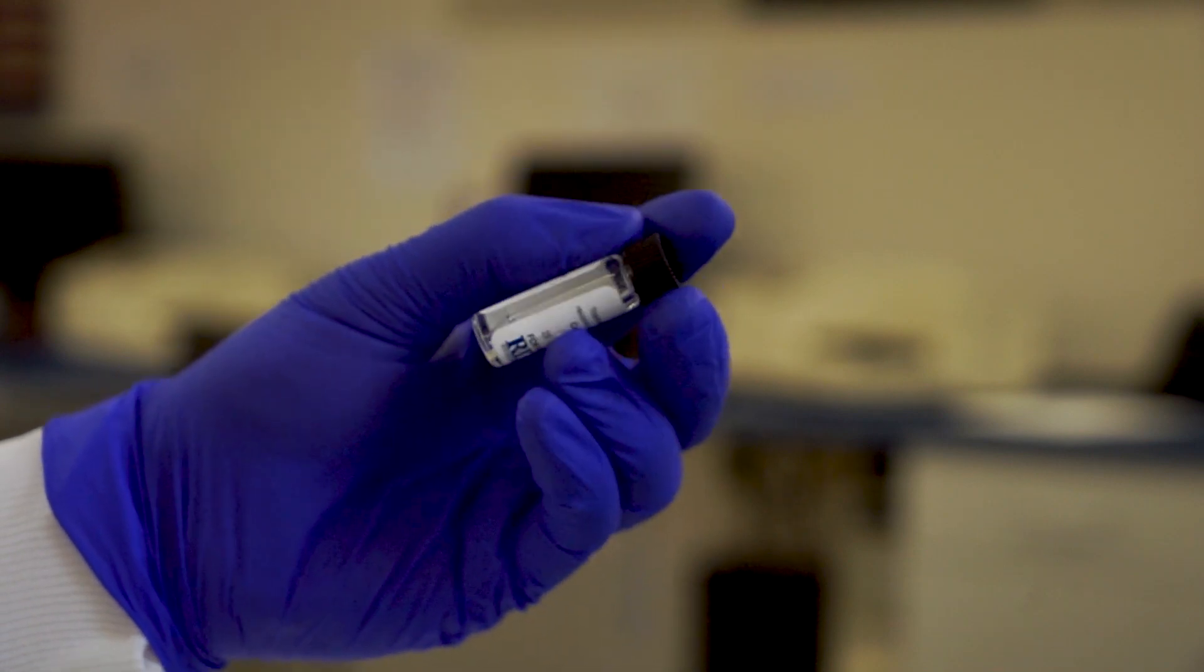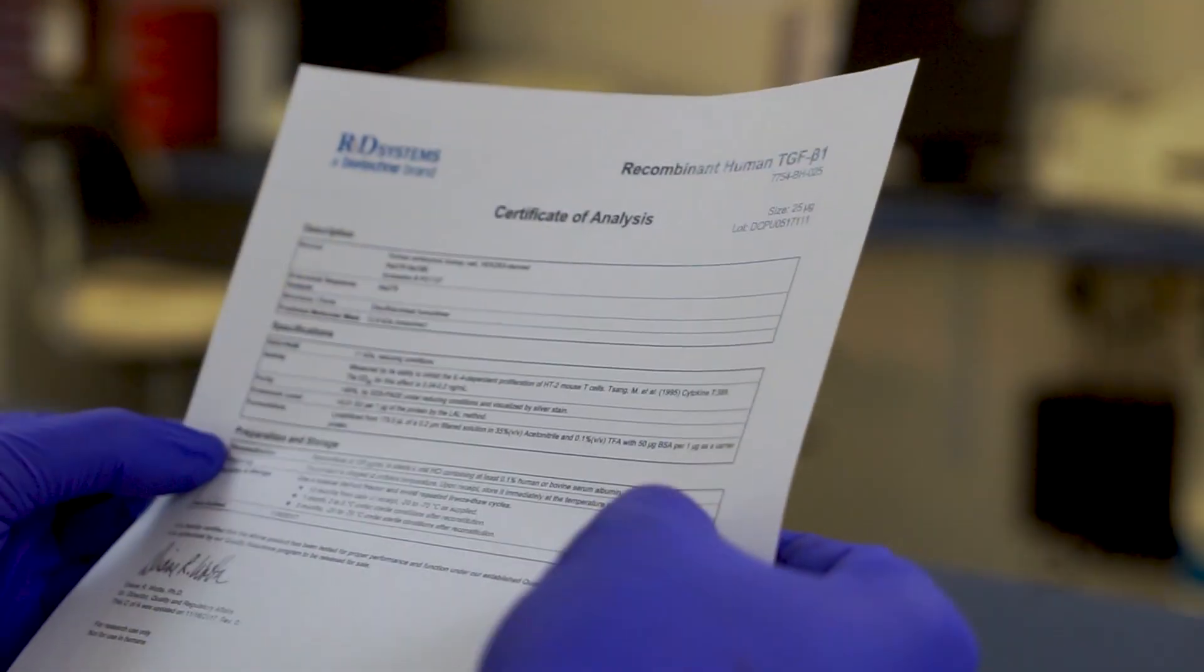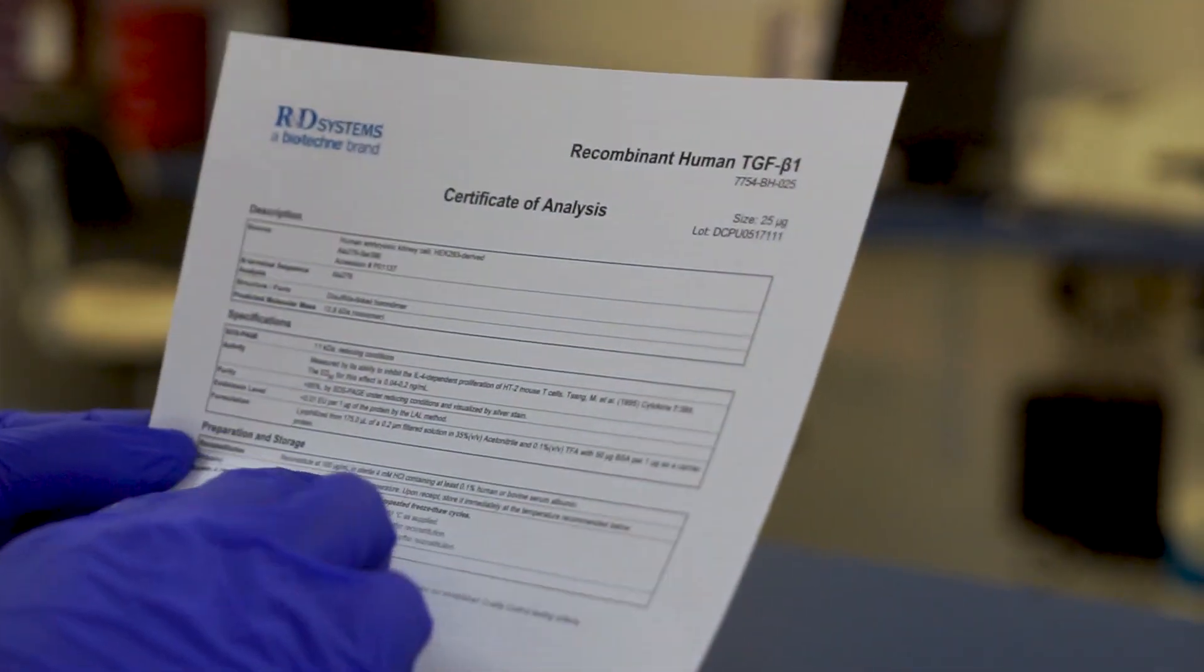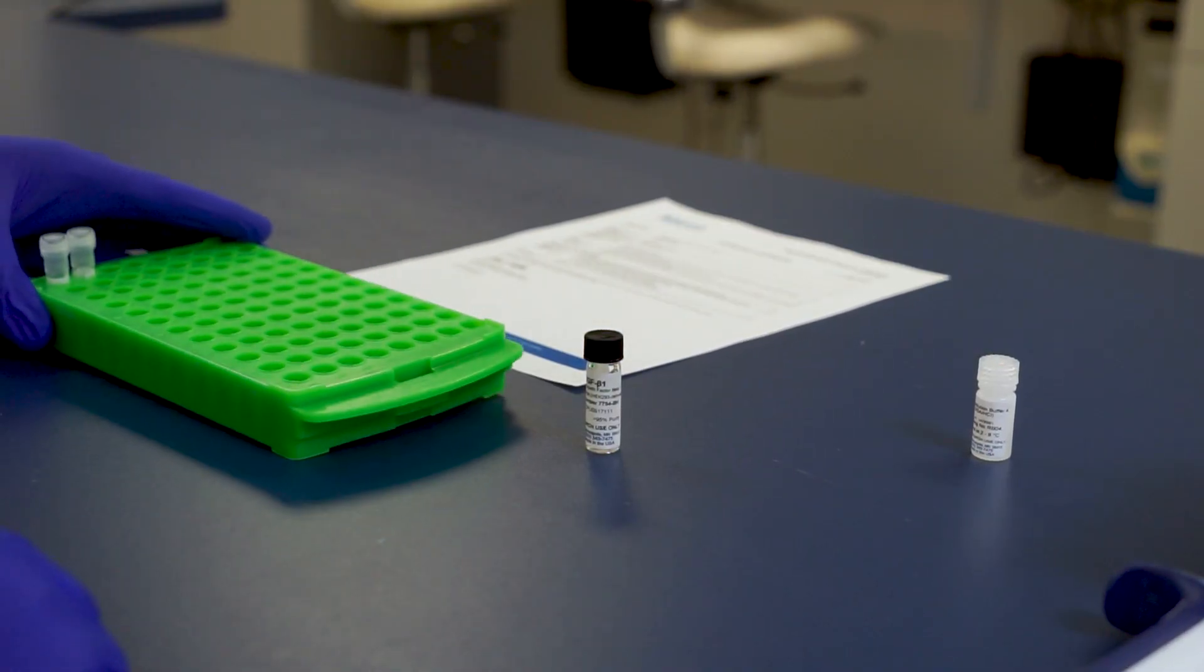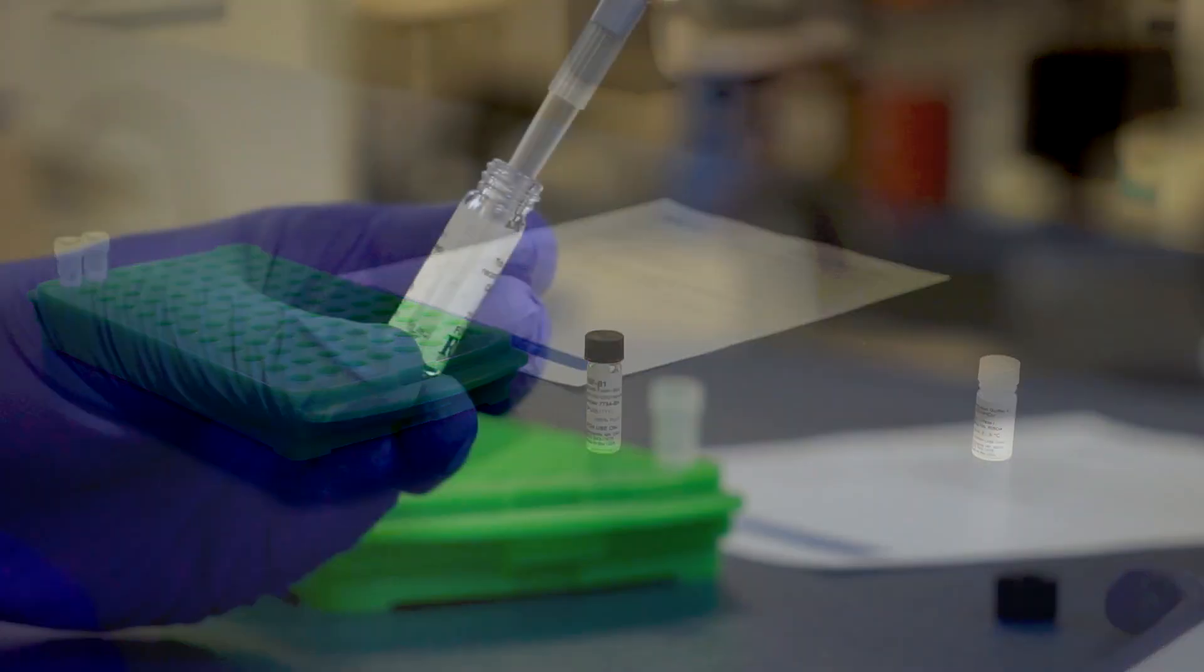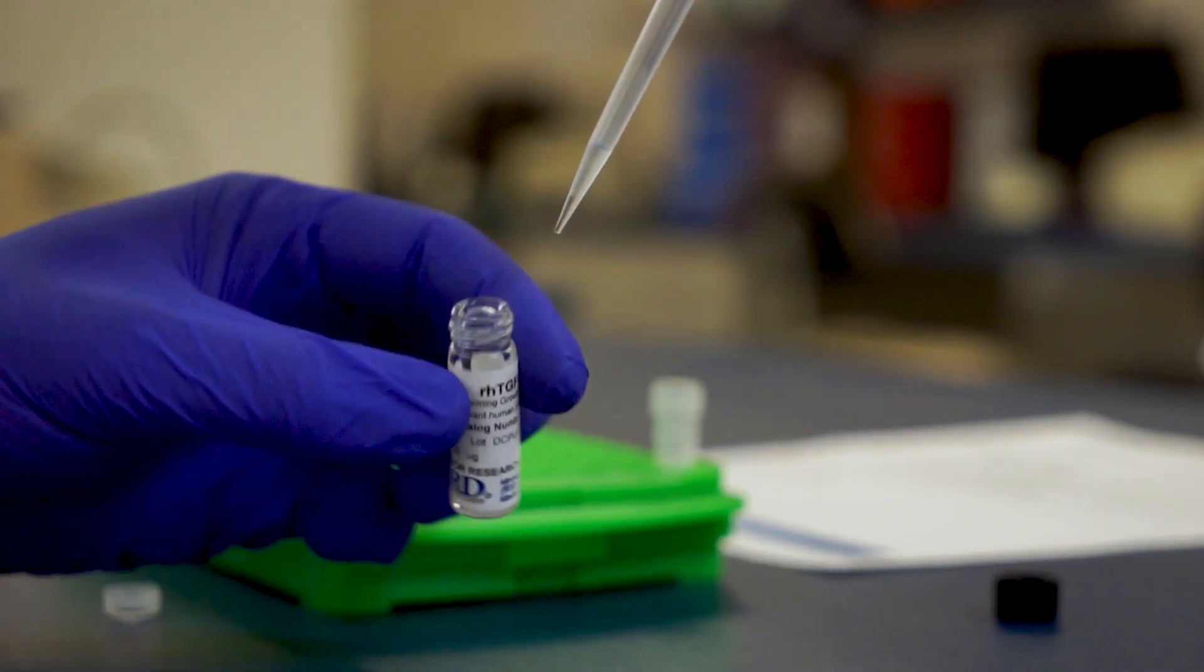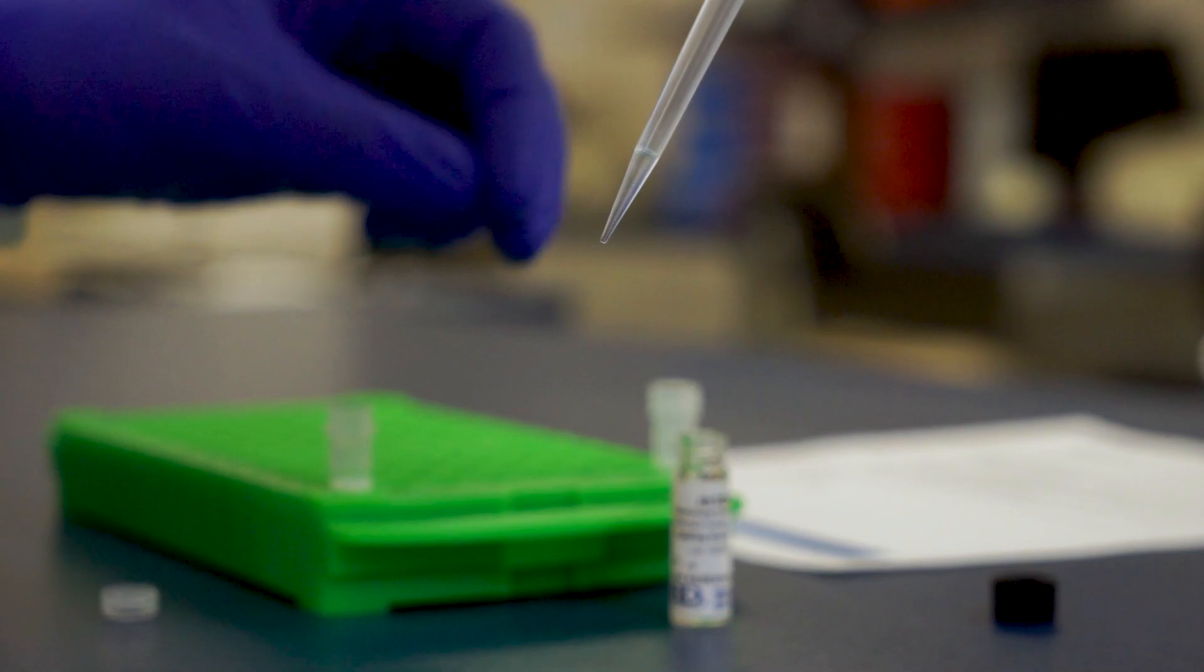Your product is now ready to use. If you are not ready to use your product just yet, specific storage instructions can be found on the C of A. We recommend using polypropylene tubes and aliquoting in volumes of no less than 20 microliters, and to minimize multiple freeze-thaw cycles that can damage the protein.